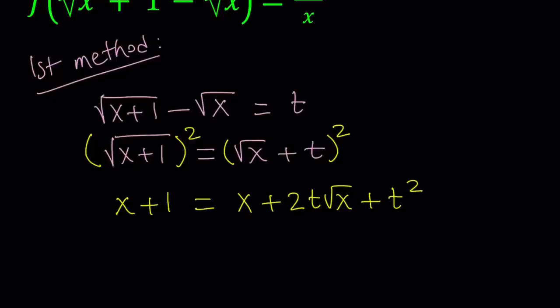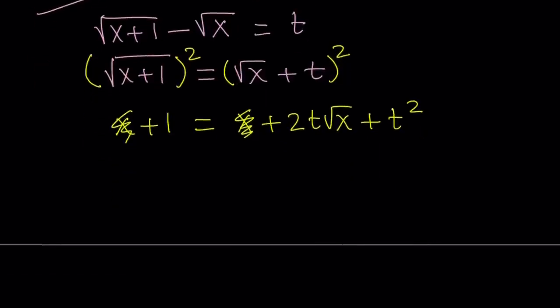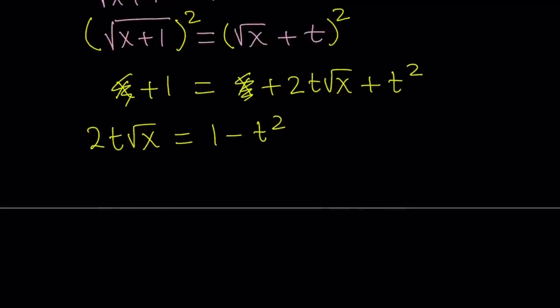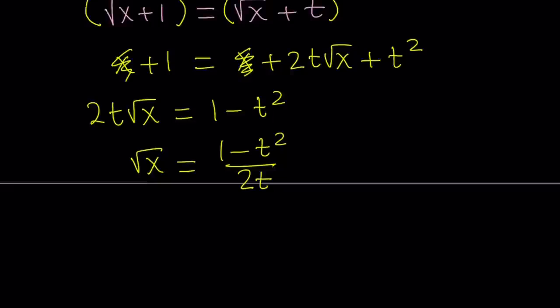Notice that the x cancels out. Our goal here is to solve for x, because we already know what t equals but we want to know what x equals. So let's isolate 2t√x and subtract t². Now since we're trying to solve for x, let's divide both sides by 2t. And then we get the square root of x, but we're trying to get x, so let's square both sides.